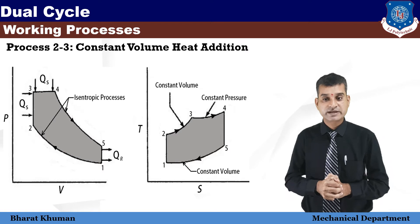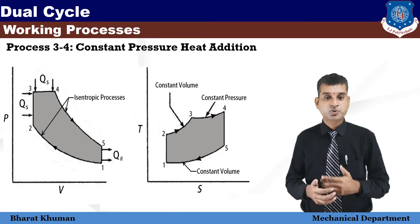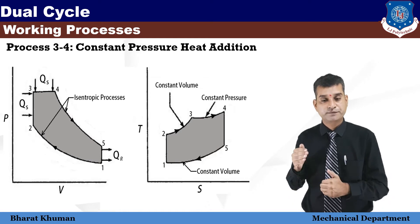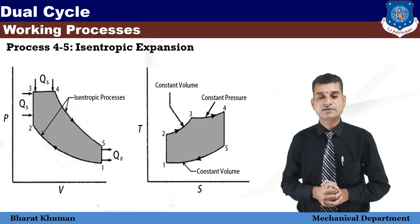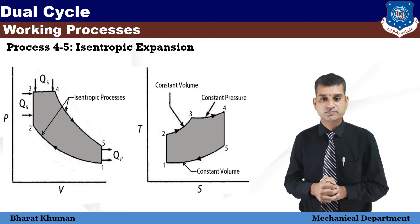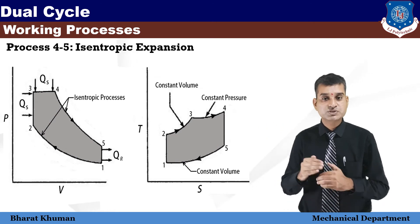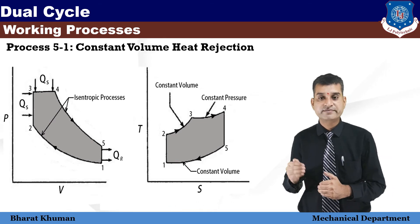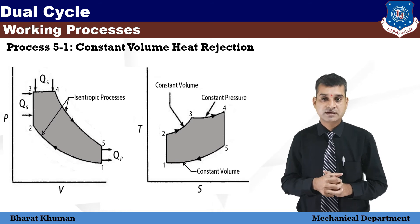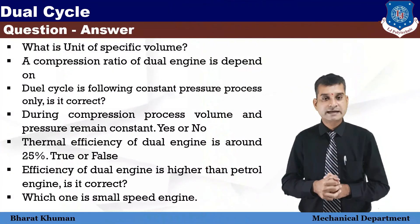Process 2-3 is constant volume heat addition, also called isochoric compression. Between state 2 and state 3 there is a constant volume, as shown in the diagram. At this time the piston is at rest at top dead center. Heat is transferred to the air from an external source while the piston is at rest. This process is similar to the isochoric process in the Otto cycle, representing ignition of the fuel-air mixture and subsequent rapid burning. The pressure rises, and the ratio P3/P2 is known as the explosion ratio.